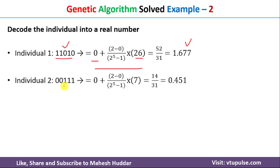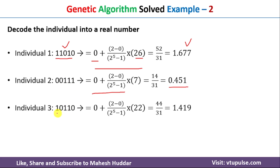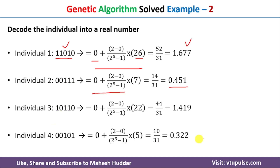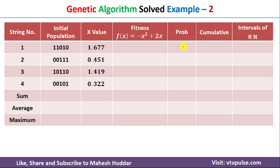Similarly, for the second individual the chromosome decimal value is 7, giving x = 0.451. The same decoding is done for the third and fourth individuals, producing real numbers in the range 0 to 2 for the entire initial population.